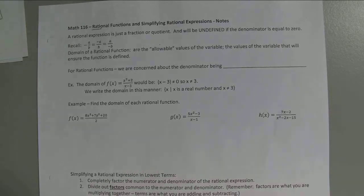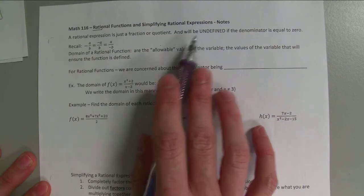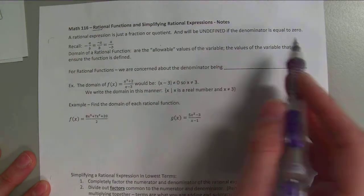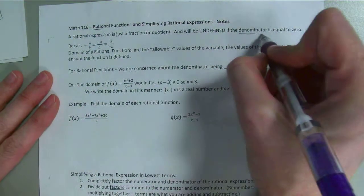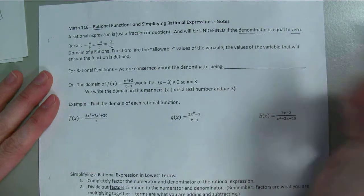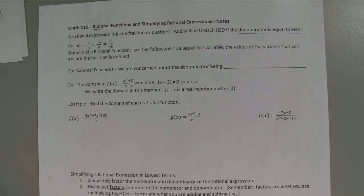Let's read some of the things it says. A rational expression is just a fraction or a quotient, and it will be undefined if the denominator is equal to zero. So we don't want our denominator to equal zero. Remember when it comes to fractions, you never want to divide by zero.